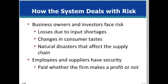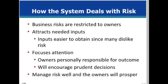In a market system, businesses all face risks, and profitability depends on how well risk is managed. Profits flow to the owners as their reward for bearing the risk of losses. Employees and suppliers to the firm do not face any risk — they get paid regardless of how well the firm is doing. The market system will experience better economic outcomes over time since owners bear responsibility for their own management decisions. Compare this to the command and control system, where no one bears responsibility for bad management and no one loses money for bad decisions — they receive the same salary regardless.